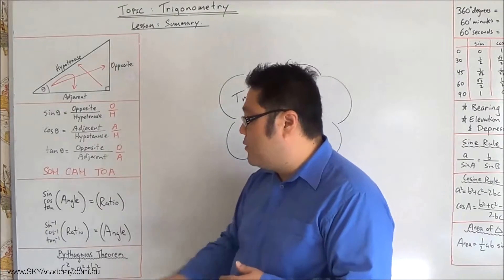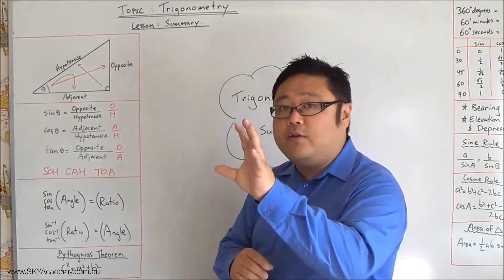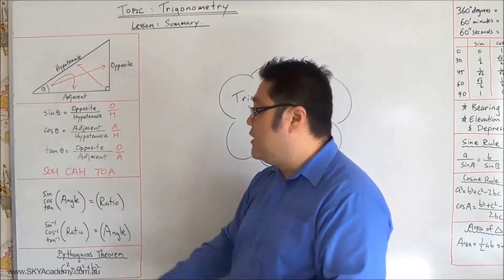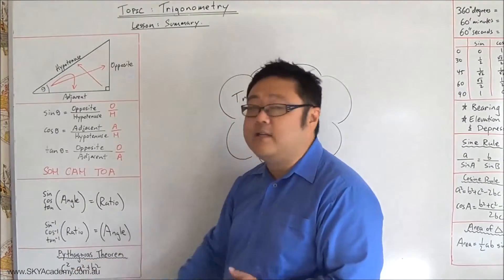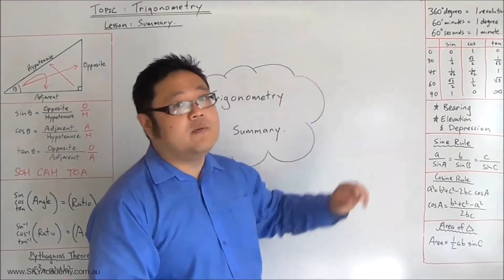The other thing that we went through was Pythagoras's theorem, which was basically that the square of the hypotenuse is equal to the sum of the squares of the two shorter sides. So you need to be aware of that, which is c squared is equal to a squared plus b squared.